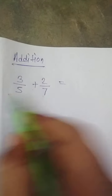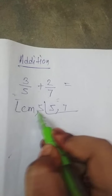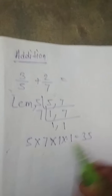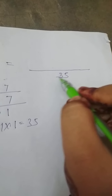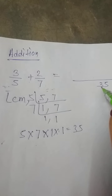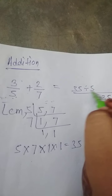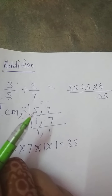First of all, we will take the LCM of the denominator. What is the LCM of 5 and 7? The LCM is 35. First we have to take the LCM of the denominator — that is 35. Now divide: 35 divided by 5 into 3, then divide with the denominator and multiply with the numerator. Then 35 divided by 7 into 2. 35 divided by 5 is 7, and 7 into 3 is 21. Plus 35 divided by 7 is 5, and 5 into 2 is 10.